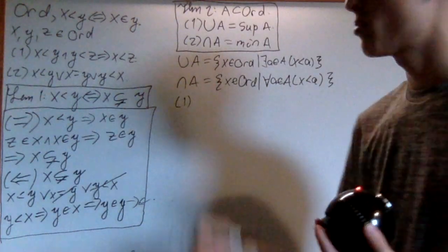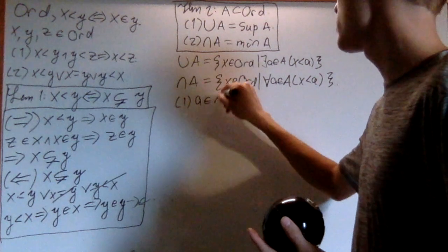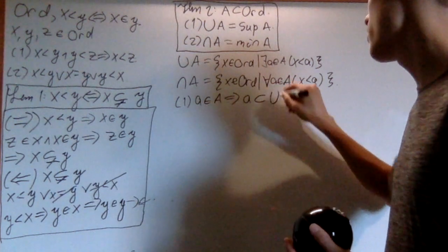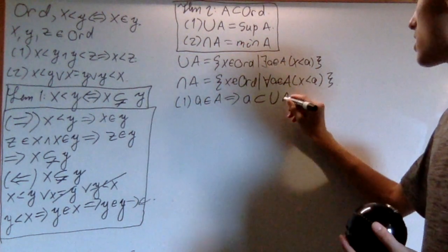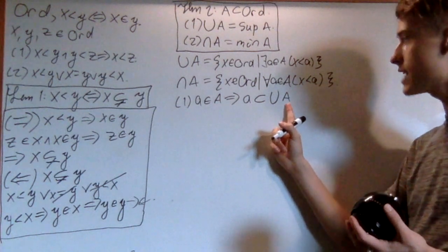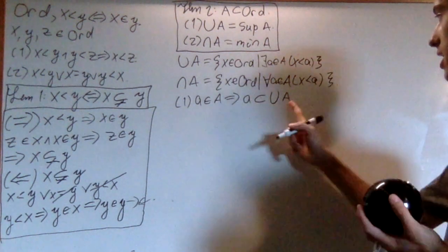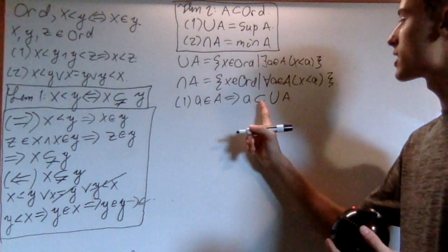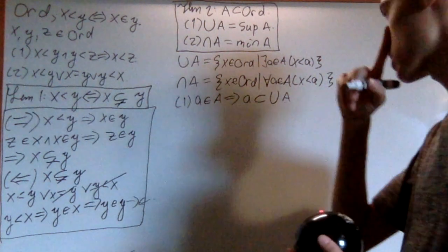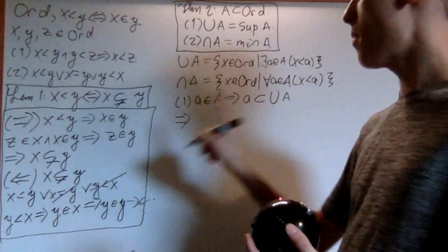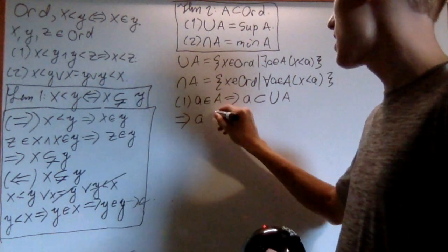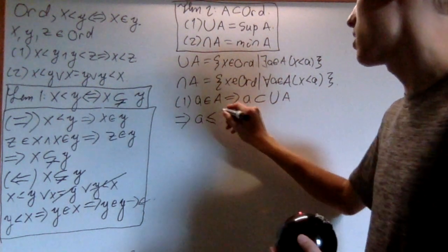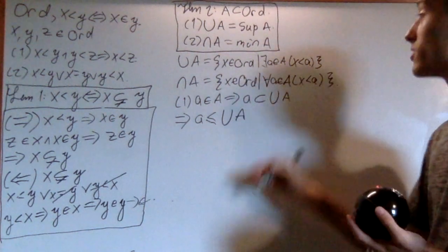The first part we prove as follows. If a is an element of A — some element of the collection — then a must be a subset of the union of A, due to the fact that somewhere in this collection there's the set, and we're just adding more elements to it. So a is a subset of it, but not a strict subset. Which then, by Lemma 1, means that a is less than or equal to the union of A. That proves that it's an upper bound — any element in the collection is less than or equal to it.